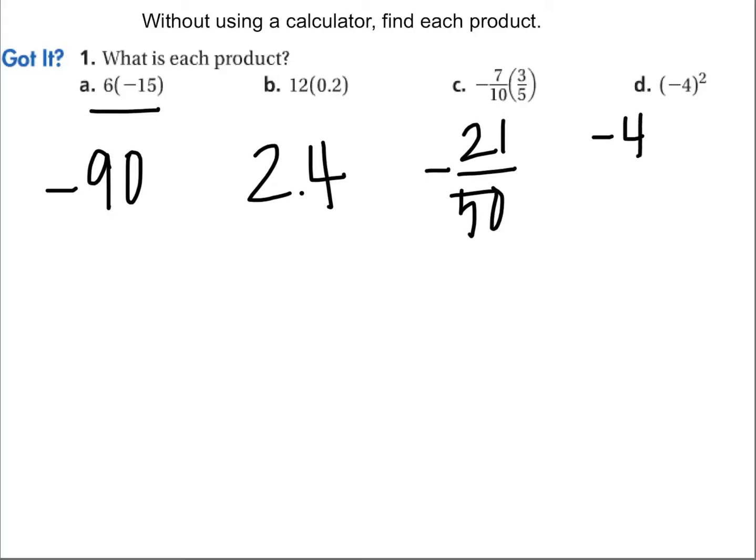Letter D, because this is in parentheses, this means negative 4 times negative 4. Negative times negative gives us positive, and 4 times 4 is 16.